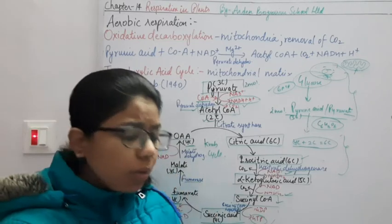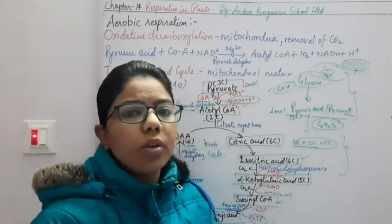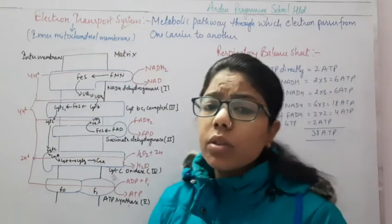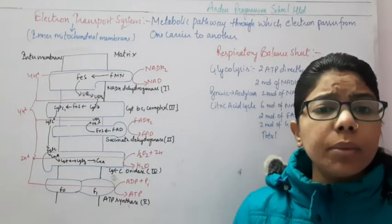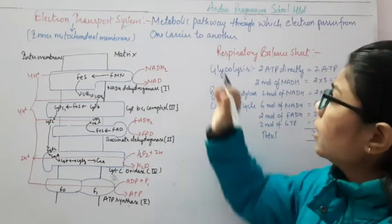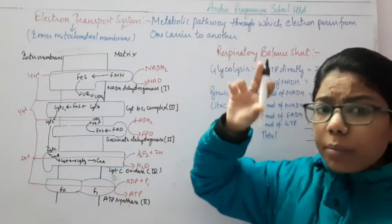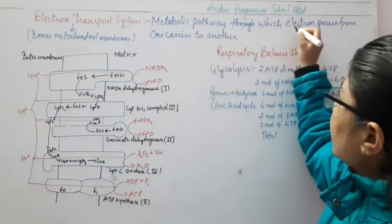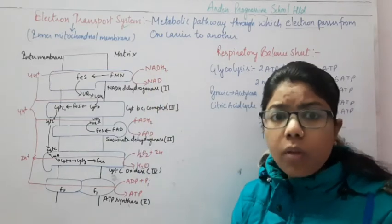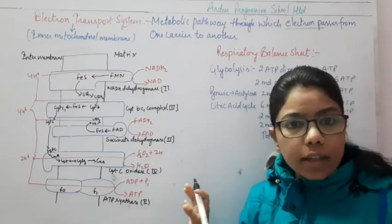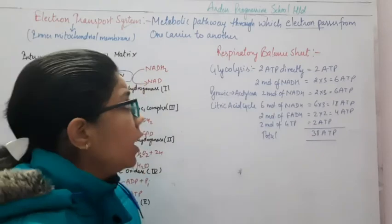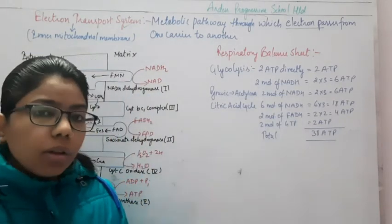Now we will understand how the energy is transformed in the electron transport system. The electron transport system is a metabolic pathway resulting from glycolysis and the Krebs cycle, through which electrons pass from one carrier to another. There are different electron carriers in this system, and we need to know about the different complexes or enzymes acting in it.